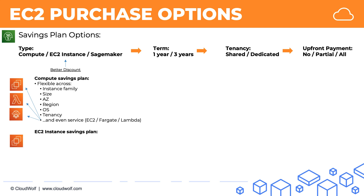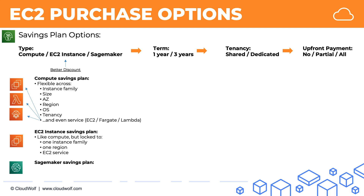The EC2 savings plan gives you a better discount but it's less flexible. It's like the compute savings plan, but you're locked to one instance family, one region, and only the EC2 service — you cannot change those things. The SageMaker savings plan is like the compute plan, but you are locked into the SageMaker service and can only use it for that.